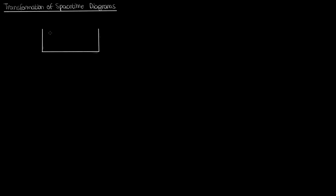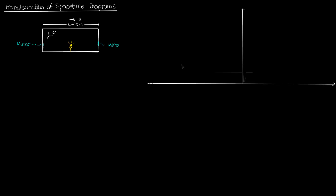Suppose I have a train with a light bulb at the center. This train is 10 meters long and is moving at a velocity v to the right. At each end of the train is a mirror, so the left one is 5 meters from the bulb and the right one is also 5 meters from the bulb. I'll call the reference frame of this train r'. If I draw the spacetime diagram corresponding to this reference frame, I'll have t' on the vertical axis and x' on the horizontal axis.